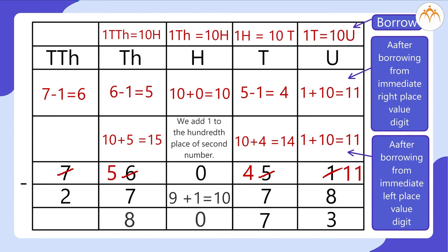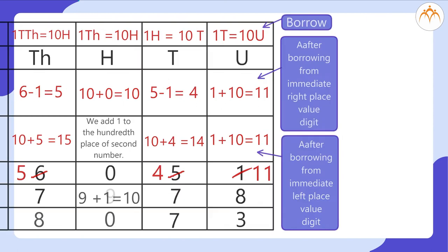Step 5: We have 7 minus 1 — the 1 that was borrowed to the thousands place — which is 6 in the ten-thousands place. Finally, 6 minus 2 equals 4. Thus, 4 is in the ten-thousands place of the difference.